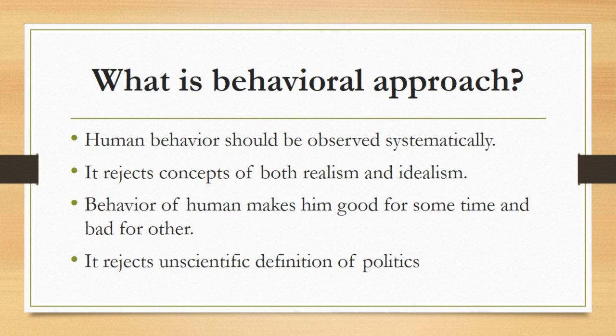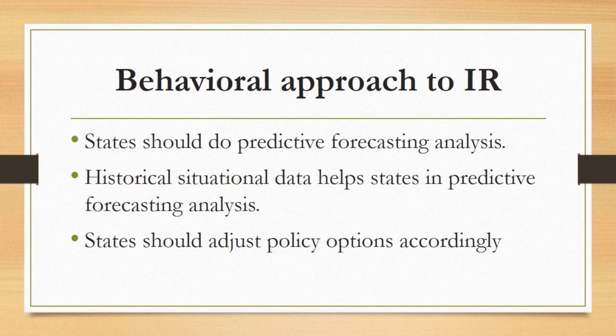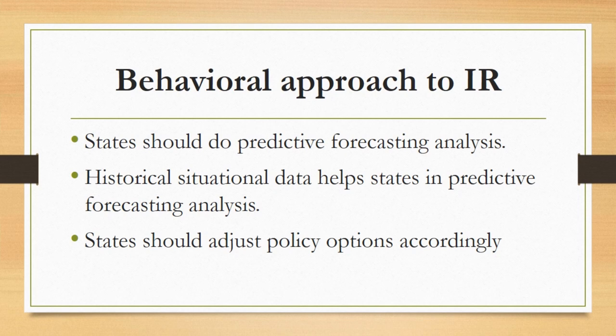After understanding the basic concept of the behavioral approach, we will now apply it to international relations. This approach says that states should do predictive forecasting analyses. For example, if there are two states — State A and State B — and State A does not know what the behavior of State B will be towards it after a specific step, then the behavioral approach argues that State A should go back in history and see what the behavior of State B was towards it in the past.